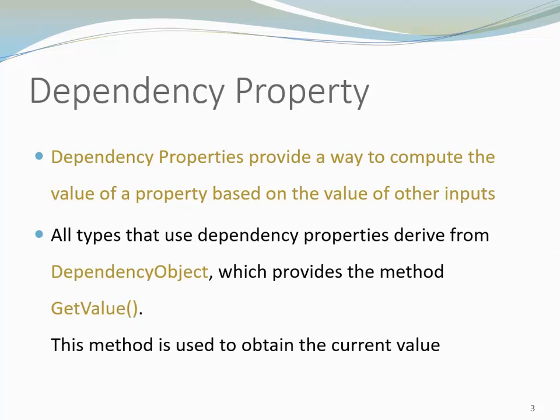All types that use Dependency Properties derive from a class called DependencyObject, which provides the method GetValue. This is the method that is used to obtain the current value of the property.